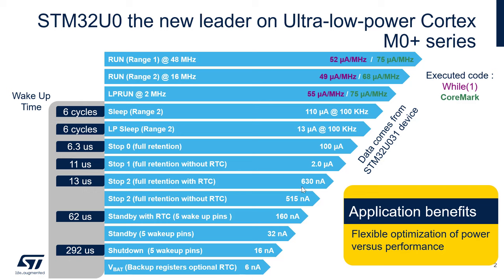With Stop 2 mode we go below 1 µA — for example, Stop 2 with full retention and RTC disabled reaches 550 nA. Wake-up from Stop 2 is still very fast at 13 µs. Moving on to Standby mode — if we wake up from five pins, we can go down to 32 nA.